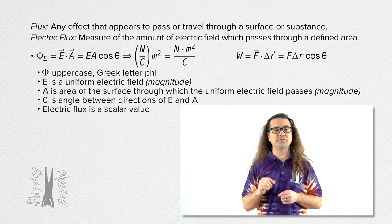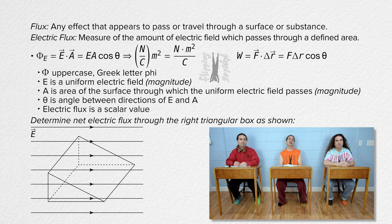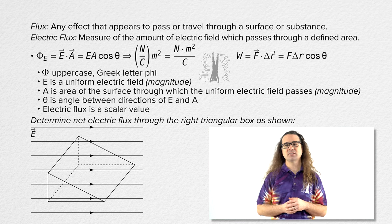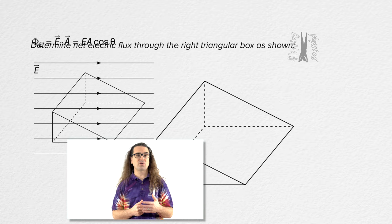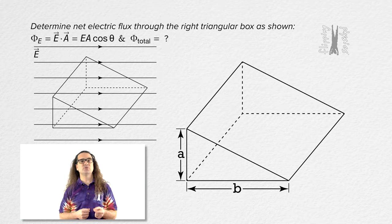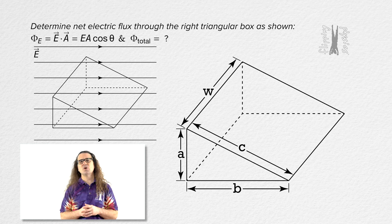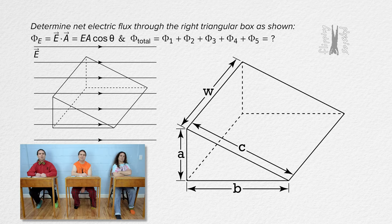Now usually when we determine electric flux it is through some sort of closed surface. So let's do an example and determine the net electric flux of a uniform horizontal electric field through a right triangular box oriented as shown in the illustration. To determine the net electric flux we need to define some dimensions. Let's label the short side of the right triangle A, the long side B, the hypotenuse C, and the width of the right triangular box W. We need to determine the electric flux through all five sides of the right triangular box and then sum all those fluxes.